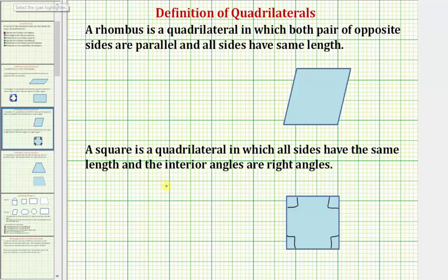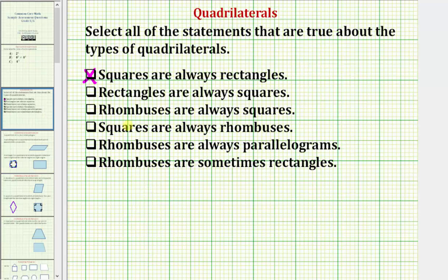A typical rhombus might look something like this. A square requires all sides to have the same length and the interior angles to be right angles. While this rhombus does have four sides of the same length, the interior angles are not right angles, which means it is not true that rhombuses are always squares. So we don't check this box.